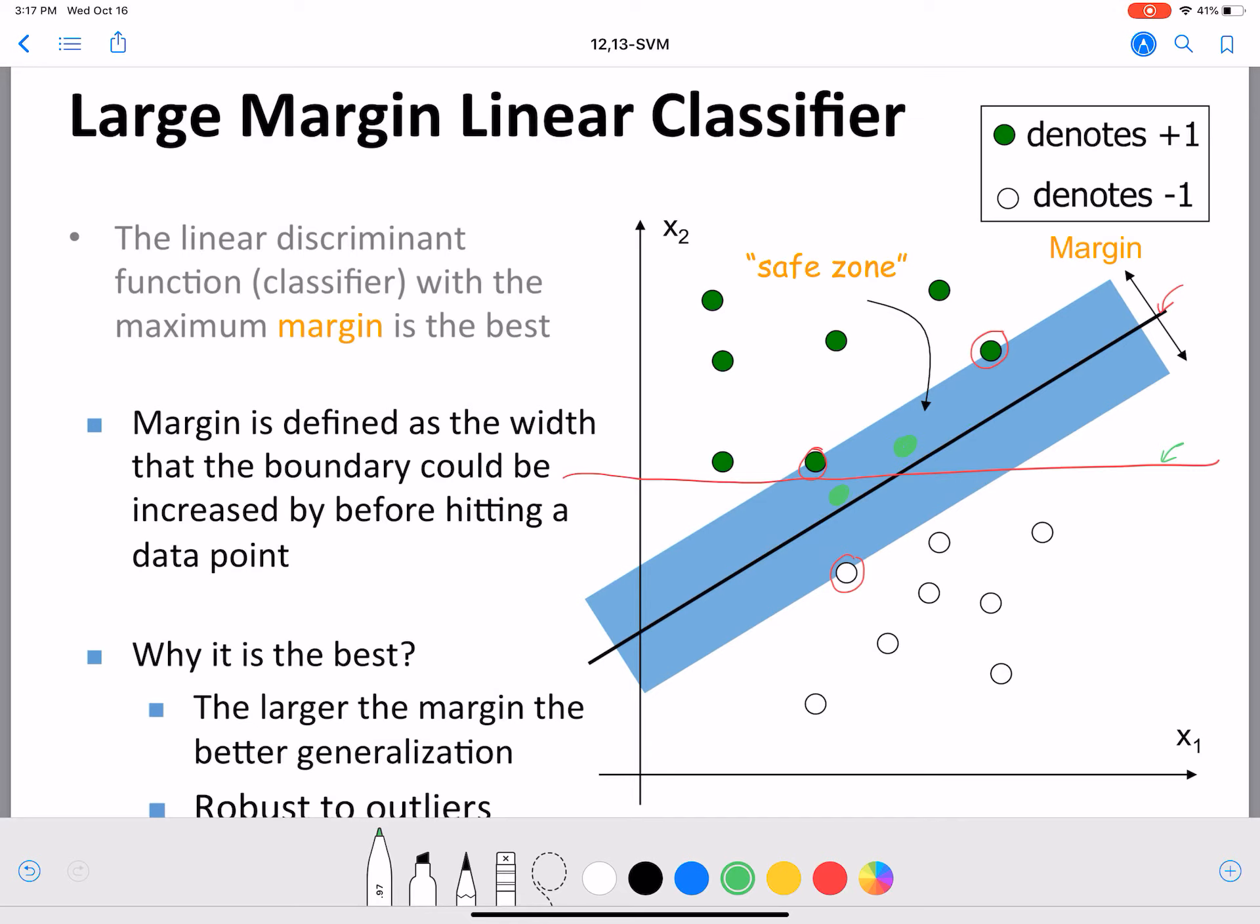So that your data points that you see at test time could be classified correctly to the best of your ability. Because you can only learn the best classifier by looking at the training data, and that is what we aim to do with SVMs and with large margin linear classifiers.